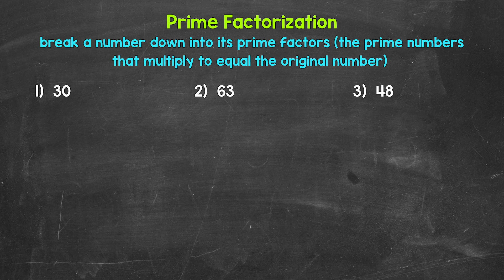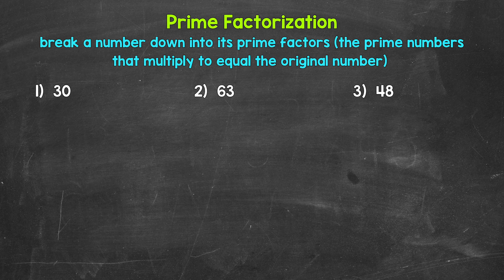Let's jump into our examples, starting with number 1, where we have 30. Now 30 is a composite number, meaning 30 has factors other than 1 and 30. So we can break this down into other factors, and we keep breaking this down until we have all prime numbers. The method we are going to use here is called a factor tree. To start, we need two factors of 30 — a factor pair — two numbers that multiply to equal 30. We will branch off of 30 with those, then continue working our way down until we only have prime numbers.